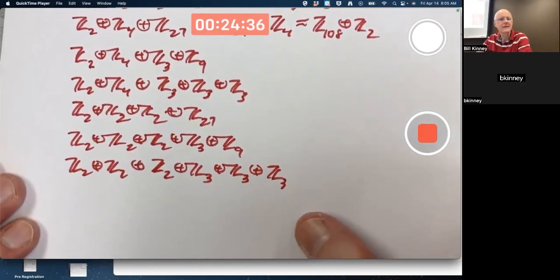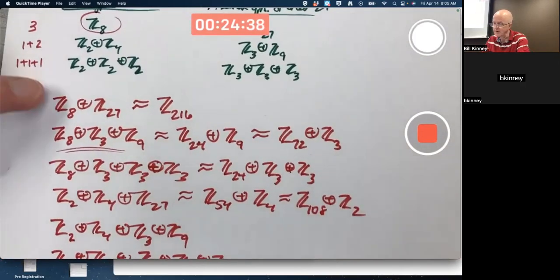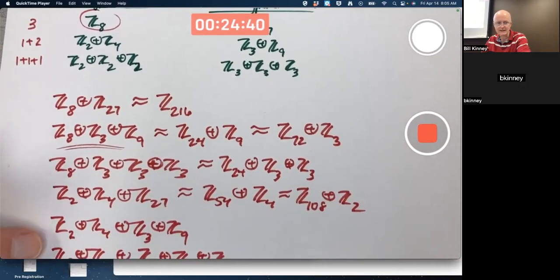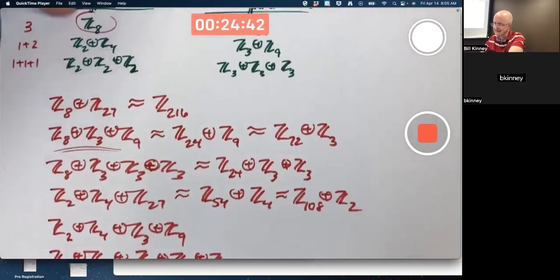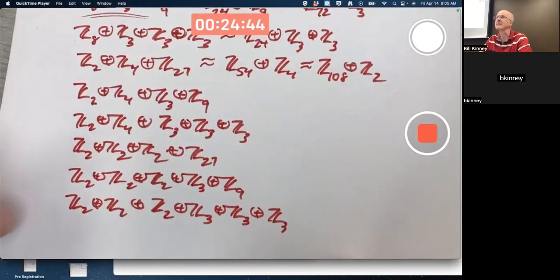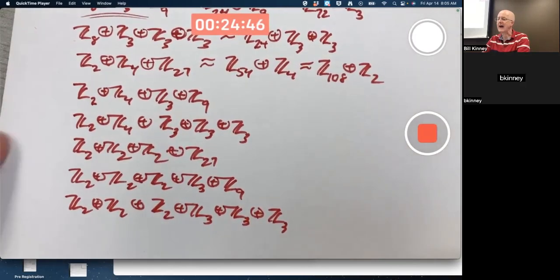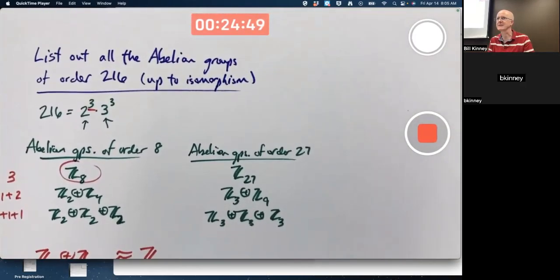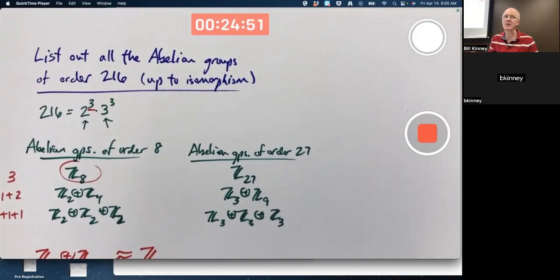All right. I guess that's all of them, right? One, two, three, four, five, six, seven, eight, nine. Okay. Nine abelian groups of order 216 up to isomorphism.